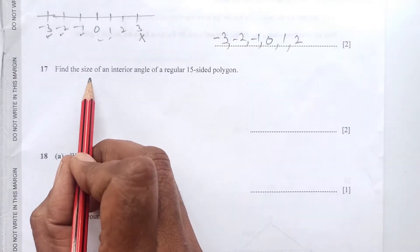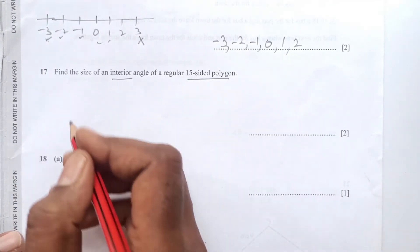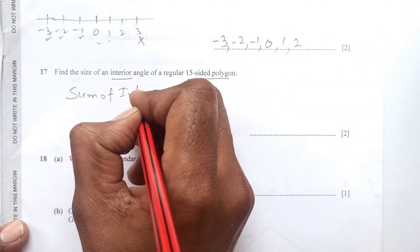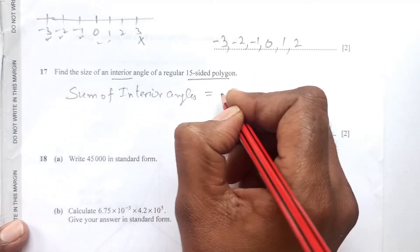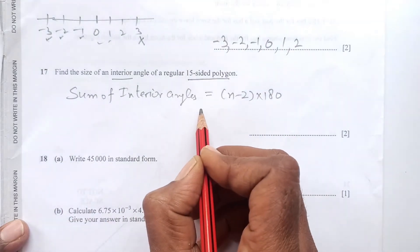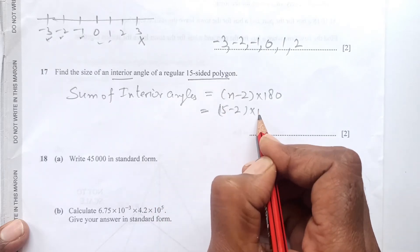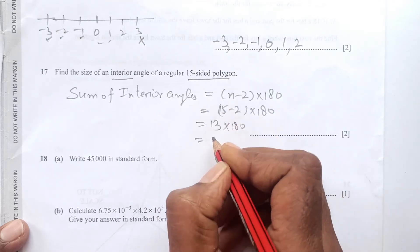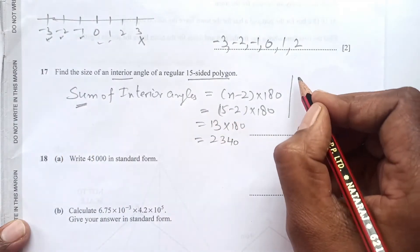Question 17: find the size of one interior angle of a regular 15-sided polygon. We know the sum of interior angles equals (n - 2) × 180. With n = 15: (15 - 2) × 180 = 13 × 180 = 2340 degrees. That is the total sum.